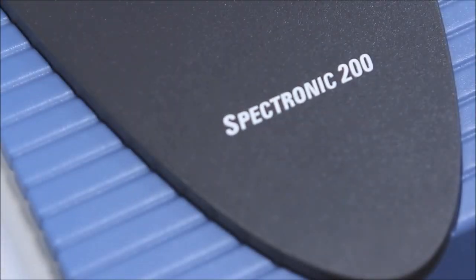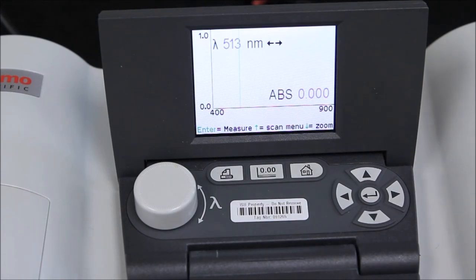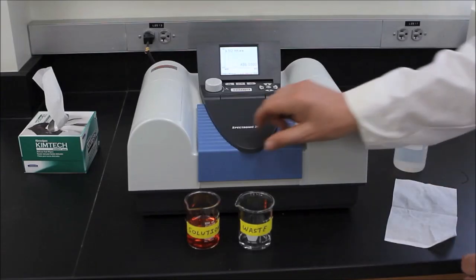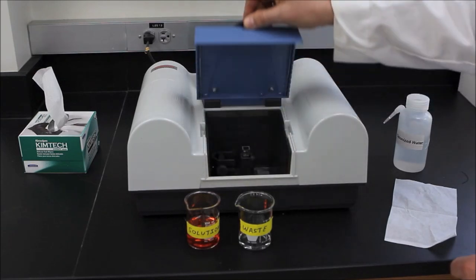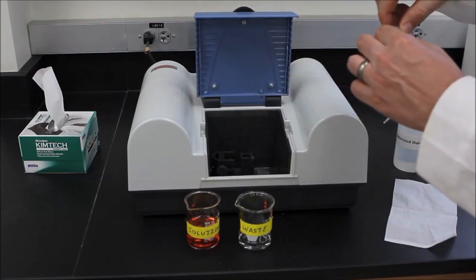After closing the sample compartment, press the zero button. When auto zero disappears from the screen, you may remove the cuvette from the cuvette holder and pour its contents into the waste container.